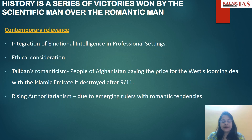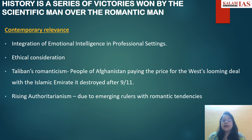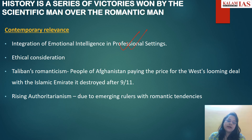Then comes the contemporary relevance — a very, very important dimension in your essay. Wherever there is a possibility, write down how this quotation is relevant as of now, taking examples of current happenings. This will create an edge over others. For example, you can write about the role of emotional intelligence in professional settings — where professional settings are about cognitive skills and scientific temper, but emotions also play a very important role in leadership qualities and interpersonal relationships. You need to understand and navigate emotions in the right way.